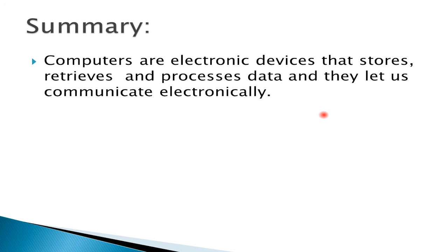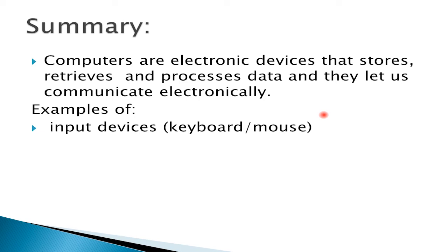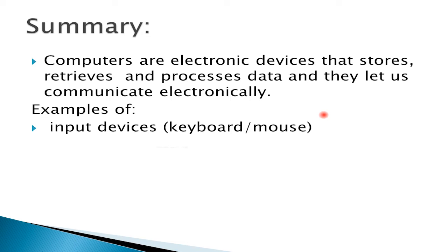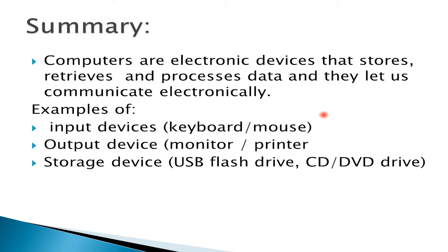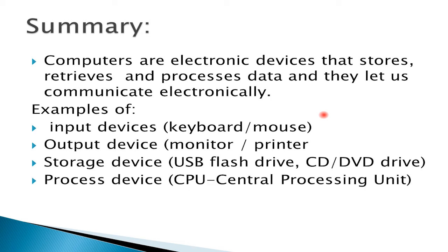To summarize our lesson: computers are electronic devices that store, retrieve, and process data, and they let us communicate electronically. Examples of input devices: keyboard and mouse. Output devices: monitor or printer. Storage devices: USB flash drive, CD, or DVD drive. Process device: the CPU, central processing unit. A simple flow chart links these four basic operations performed by your computer.